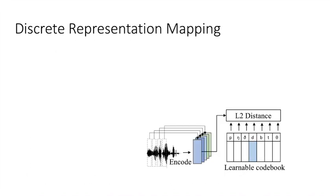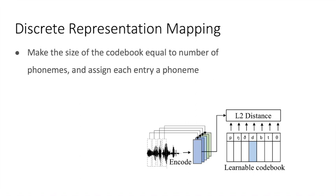To map codes to phonemes, we do the following things. First, we make the size of the codebook equal to the number of phonemes. And, we assign each code a phoneme.